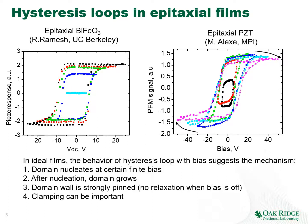The important consideration is that when measuring hysteresis on a new material, it is worth exploring the bias windows to determine how much voltage is needed for polarization to switch, whether it saturates, and how stable the material is against tip damage. The key questions to answer are: does the loop saturate, and at what bias? How stable is the material under repeated tip-induced switching?